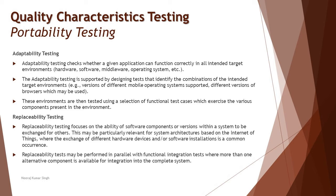Adaptability can be measured by designing tests that identify various combinations of the target environment — using pairwise combinatorial techniques or permutations and combinations of different target environment parameters. This helps build a set of test cases where the system can be tested and measured for its adaptability towards different target environments. Users can try the application in different target environments and measure its adaptiveness.